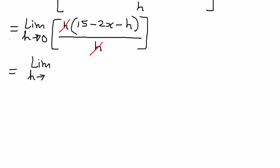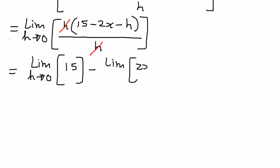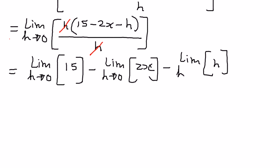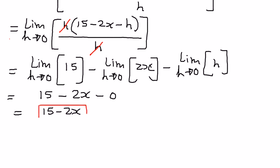So we can simplify this further as: the limit as h approaches 0 of (15 minus 2x minus h). The limit of 15 as h approaches 0 is equal to 15. The limit of 2x as h approaches 0 is equal to 2x. And the limit of h as h approaches 0 is equal to 0. Therefore, this function simplifies to 15 minus 2x, and this is our first derivative of the given function.